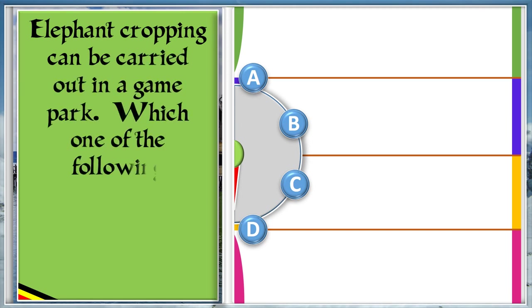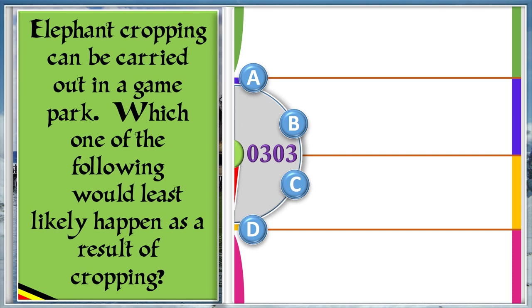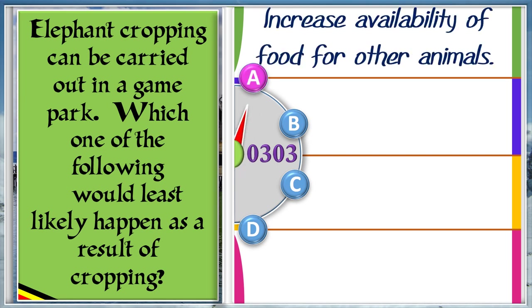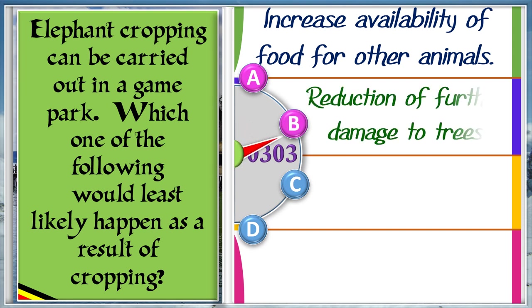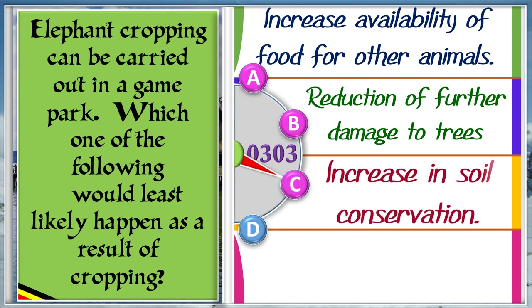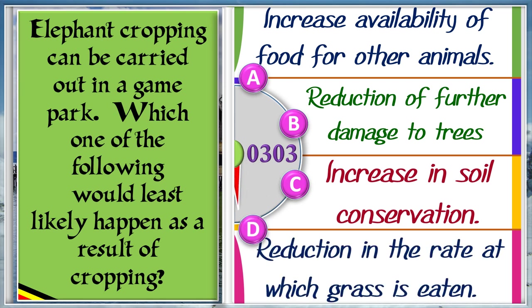Elephant cropping can be carried out in a game park. Which one of the following would least likely happen as a result of cropping? A: Increase availability of food for other animals. B: Reduction of further damage to trees. C: Increase in soil conservation. D: Reduction in the rate at which grass is eaten. And the answer is C, increase in soil conservation.